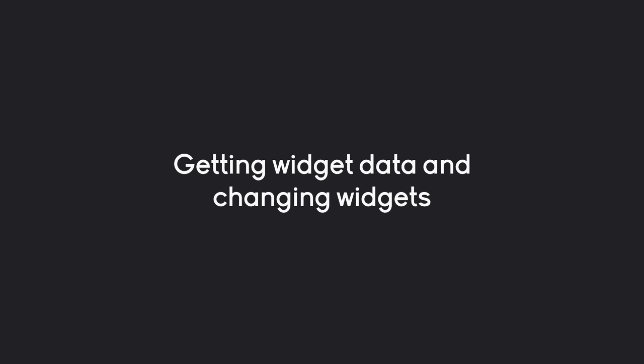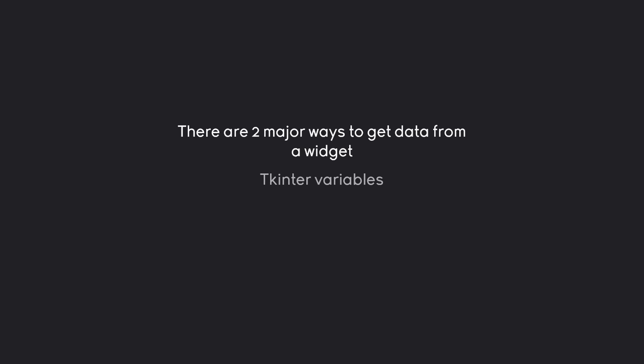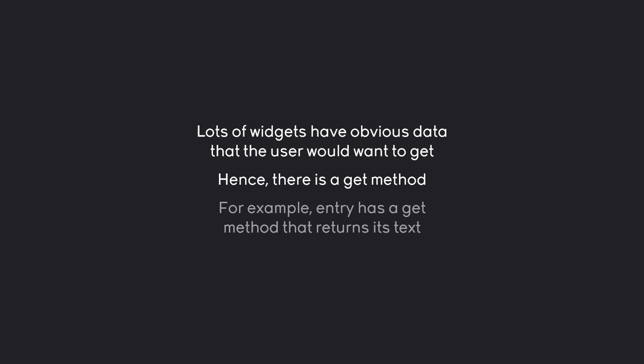So far our app is pretty static. In this part, I want to cover getting widget data and changing widgets. There are two major ways to get data from a widget: tkinter variables (the preferred approach, covered later) and the get method. The get method is the easiest way — lots of widgets have a dedicated method to return their obvious data.